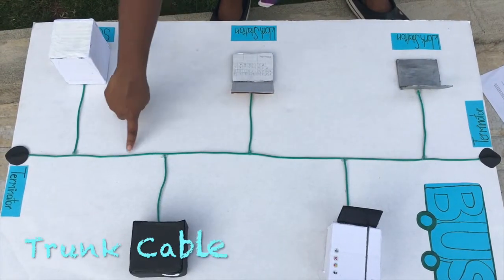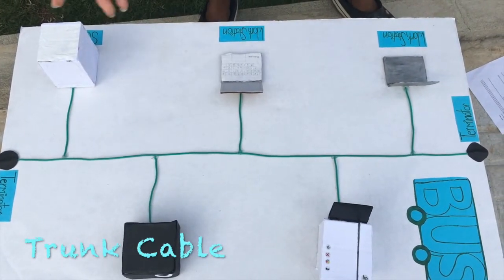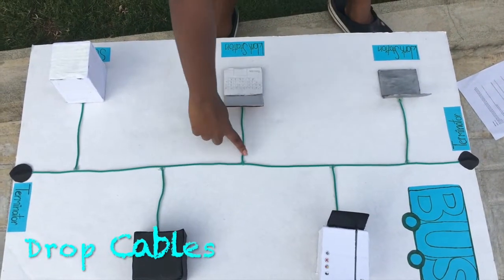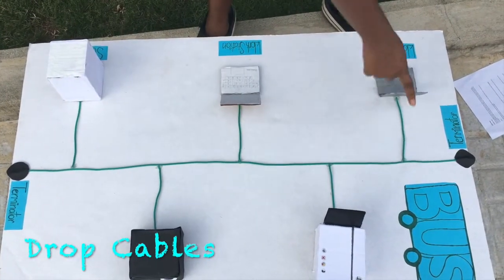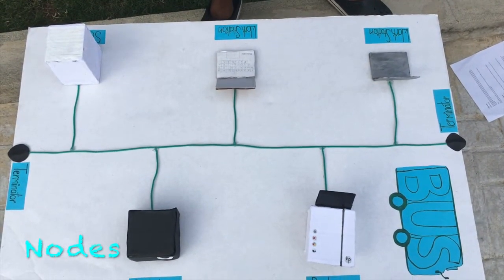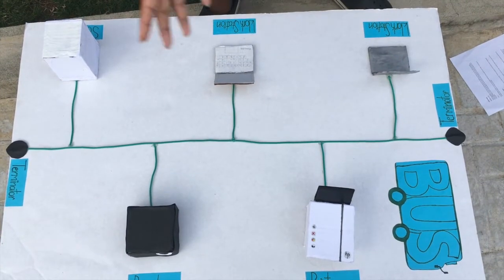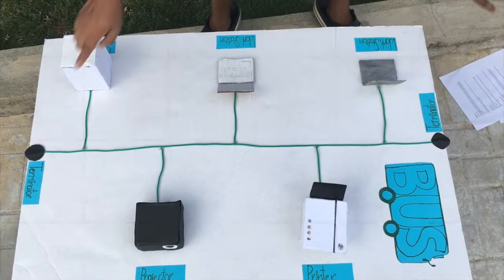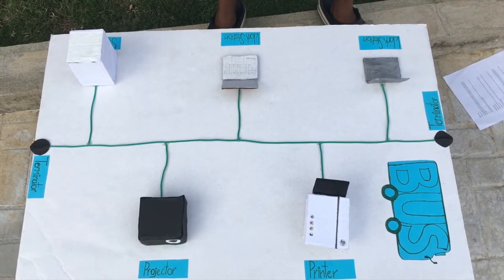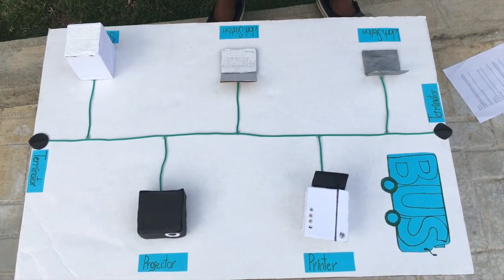To familiarize you with the bus topology network: this is the trunk cable, or main cable — it connects all the drop cables to the main cable. These are the drop cables; they connect the nodes to the main cable. These are the nodes — they're all connected together in the network, and these are things you use in your everyday life. These are the terminators; they destroy data that reaches the end of the main cable to prevent the bouncing back of signals.